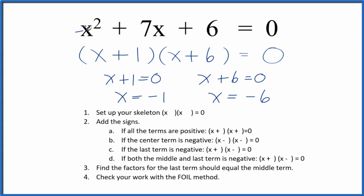If you put negative 1 in for x, you do the math, this side will equal 0. If you put negative 6 in for x, same thing, we'll have 0 equals 0.